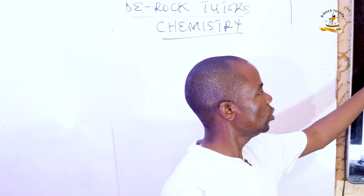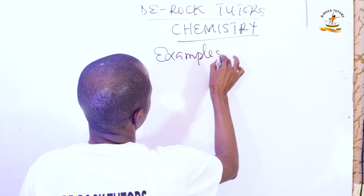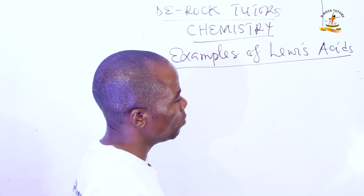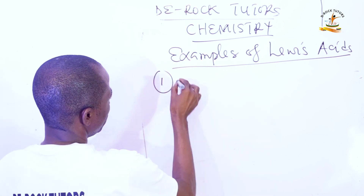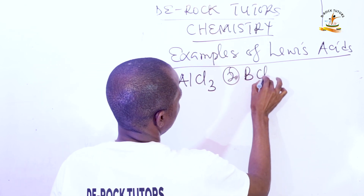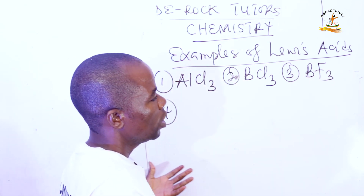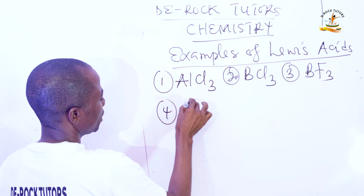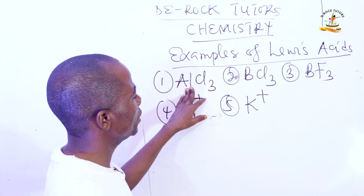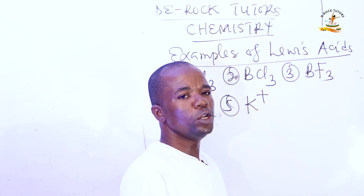Moving to part (ii), we are asked to give one example of a Lewis acid. There are several examples. An example is aluminium chloride, AlCl3. Another example is boron trichloride, BCl3. Another is boron trifluoride, BF3. Don't forget that cations are usually Lewis acids — cations like hydrogen ion (a proton) and potassium ion. All of these are examples of Lewis acids.